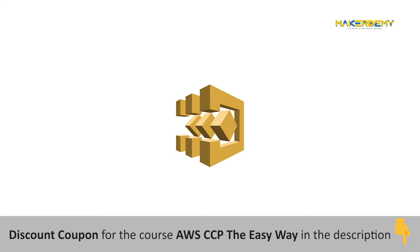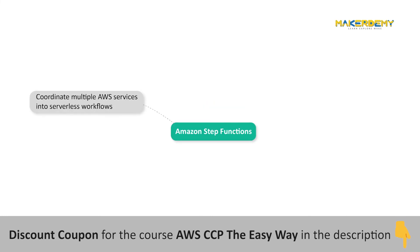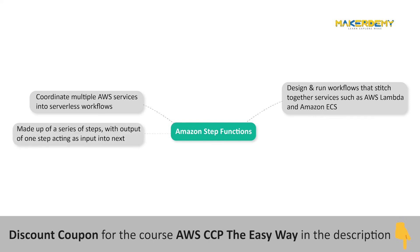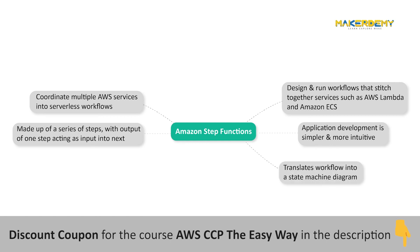Amazon Step Functions. AWS Step Functions lets you coordinate multiple AWS services into serverless workflows so you can build and update apps quickly. Using Step Functions, you can design and run workflows that stitch together services such as AWS Lambda and Amazon ECS into feature-rich applications. Workflows are made up of a series of steps with the output of one step acting as input into the next. Application development is simpler and more intuitive using Step Functions because it translates your workflow into a state machine diagram that is easy to understand, easy to explain to others, and easy to change.